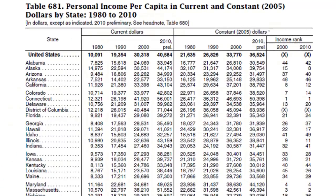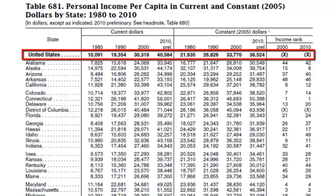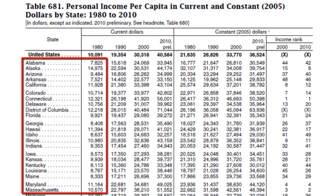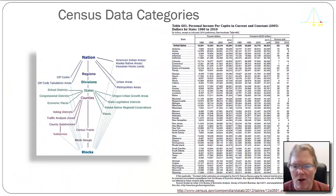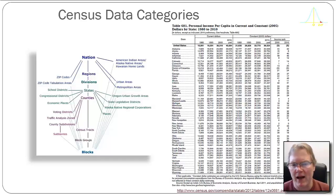In the table we have a ton of information. For example, for the entire United States we can see that in current dollars in 1980 the personal income per capita was $10,091. We can break that out by state, and of course once we have the states we could put it into census regions or census divisions and aggregate to different levels. This is a good template for the kinds of information you would want in a table when building your own tables for reports in college.